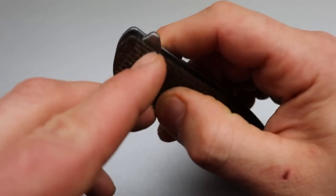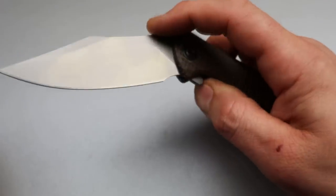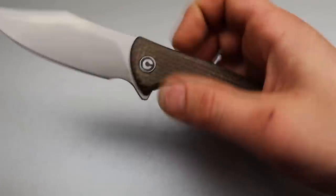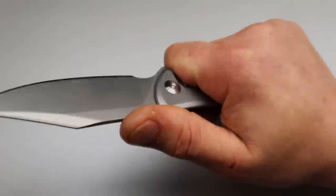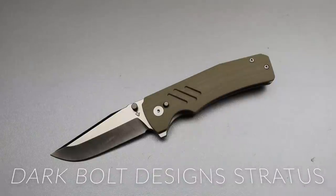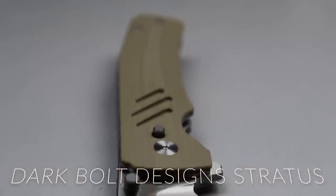The flipper tab is nice and comfortable. Just breaking the detent, it snaps out with authority. It is slim though. This is a lot slimmer and it's just a fantastic knife. This wasn't really part of the list, but I figured I'd add it anyway. Next is the Dark Bolt Designs Stratus.